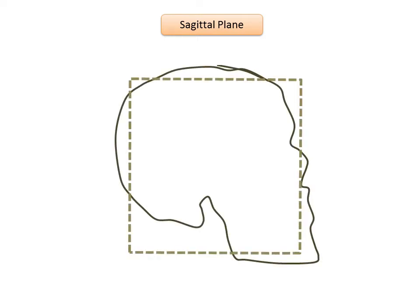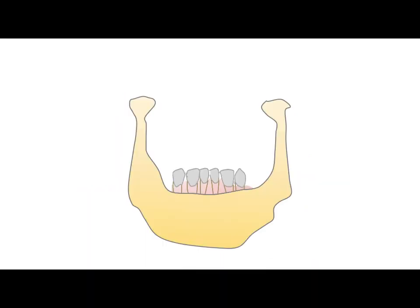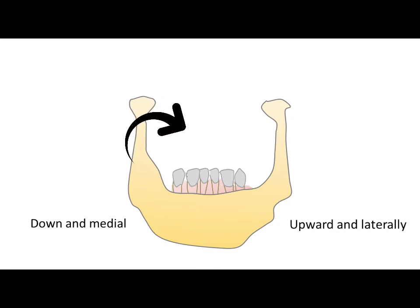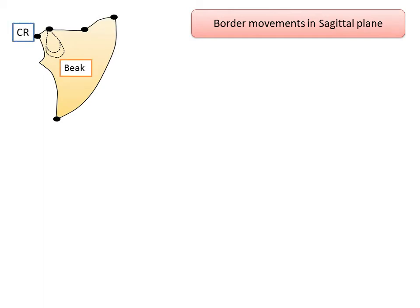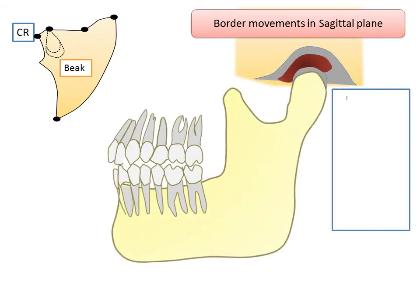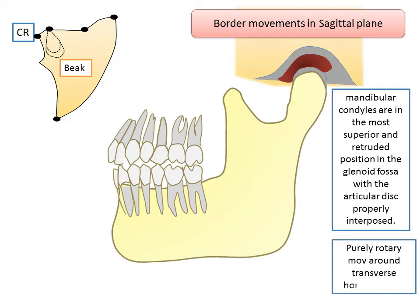The sagittal plane is the vertical plane that divides the face into right and left halves. The sagittal axis is an anterior-posterior axis around which the mandible shows slight rotation. During this movement, the condyle on one side moves downward and medially along the slope of the entoglenoid process — that is the medial slope of the glenoid fossa — while the condyle on the opposite side moves upward and laterally. This type of movement is usually seen in association with lateral movements. A characteristic beak tracing is formed while recording border movements in the sagittal plane. The patient is instructed to move the mandible from centric relation — when the mandibular condyles are in the most superior and protruded position in the glenoid fossa with the articular disc properly interposed — which is a purely rotary movement around the transverse horizontal axis.